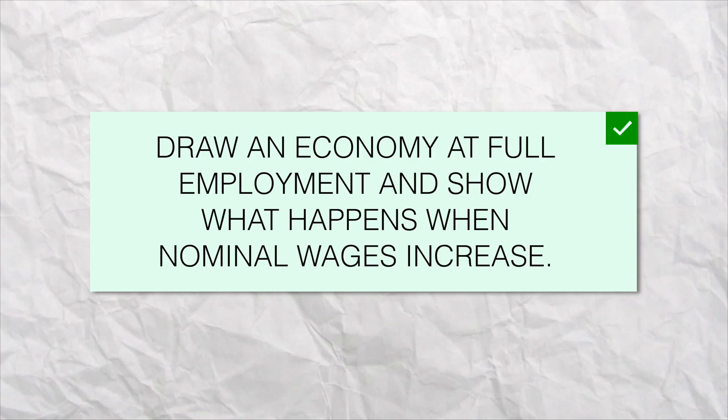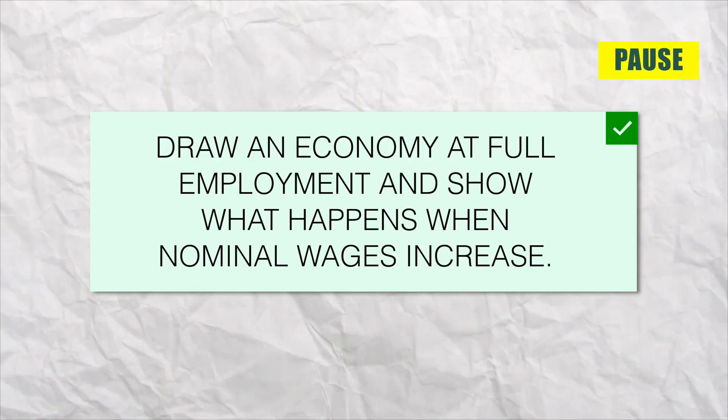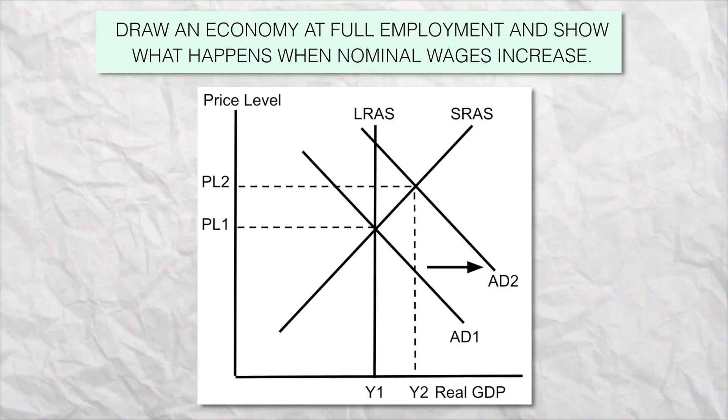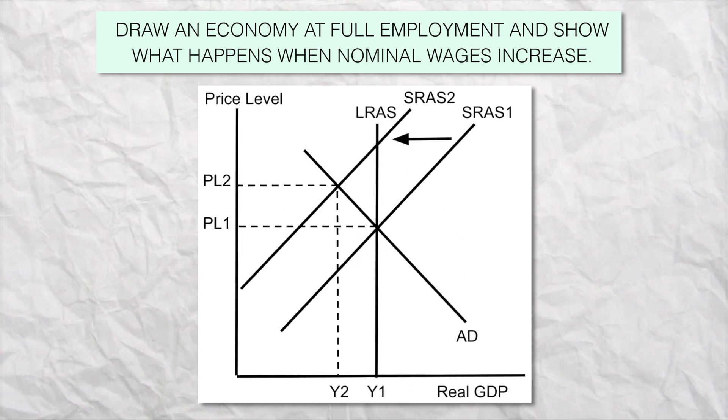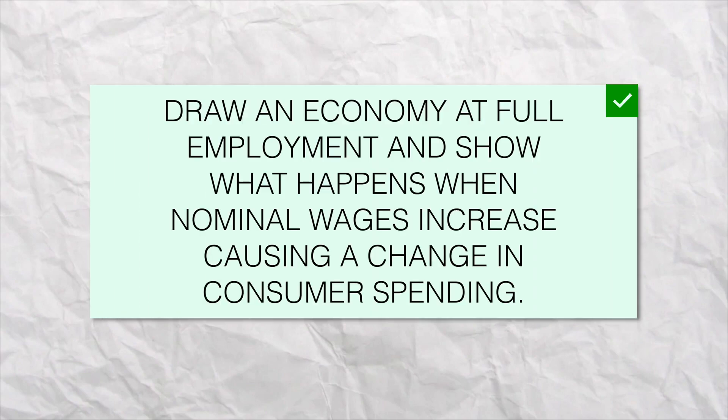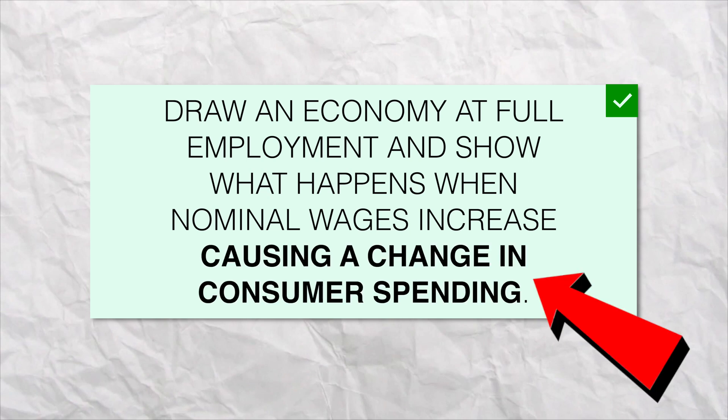Draw an economy at full employment and show what happens when there's an increase in nominal wages. This is a bad question because there are two right answers. You could say that higher wages will increase consumer spending, so aggregate demand will increase and shift to the right. Or you could say that higher wages means businesses have higher costs, so the short run aggregate supply will decrease and shift to the left. Instead, questions have to clarify — for example: show what happens when there's an increase in nominal wages which causes a change in consumer spending. That extra part tells you we're talking about aggregate demand. There's only one right answer, so make sure to read the question carefully — it's going to tell you whether it's demand or supply.